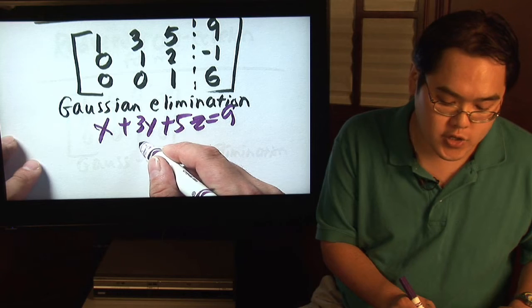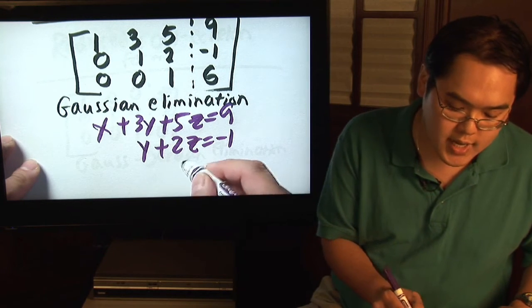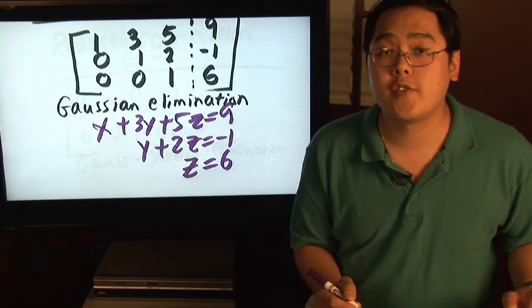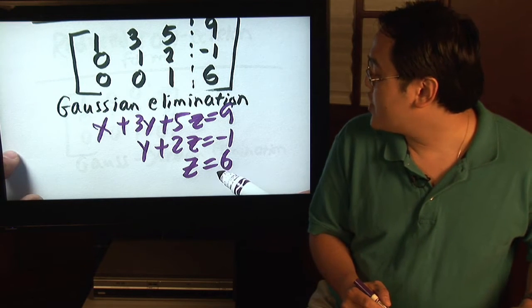The second equation is going to be y plus 2z is equal to negative 1, and the bottom equation can be written as z is equal to 6.